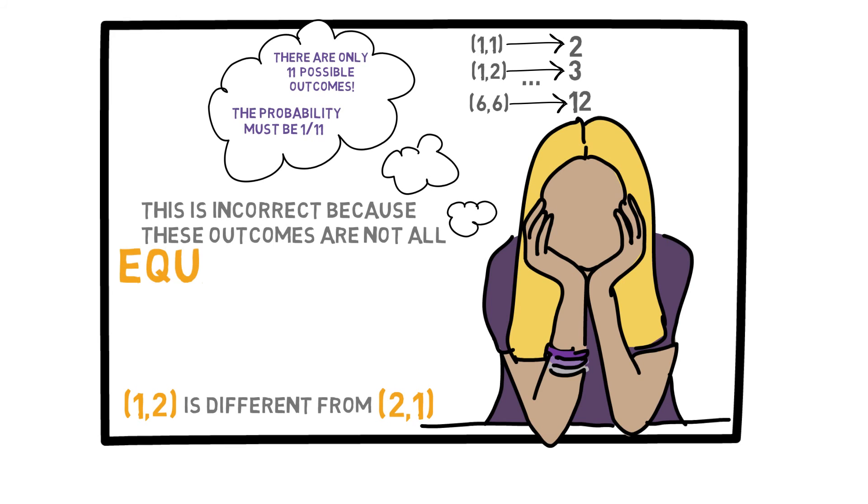Think about it. 2 can only be observed if you happen to roll 1 and 1. So the probability of observing 2 is very small, just 1 out of 36. But there are 5 possible ways of getting a sum of 8. So it is more likely to observe 8 than 2.